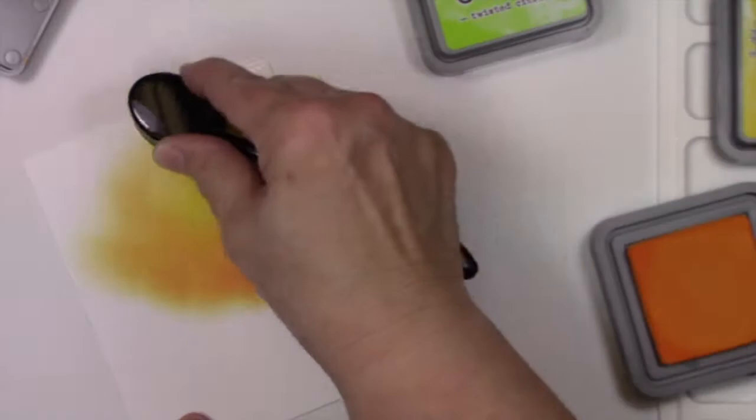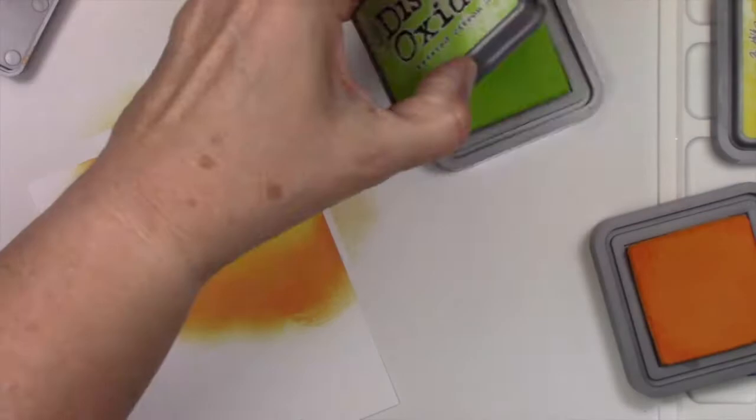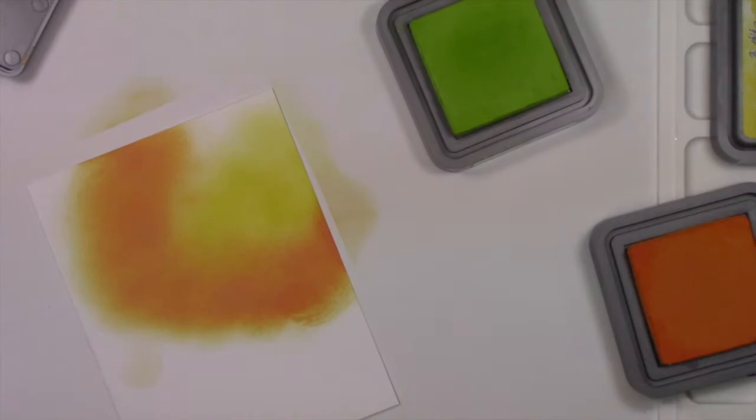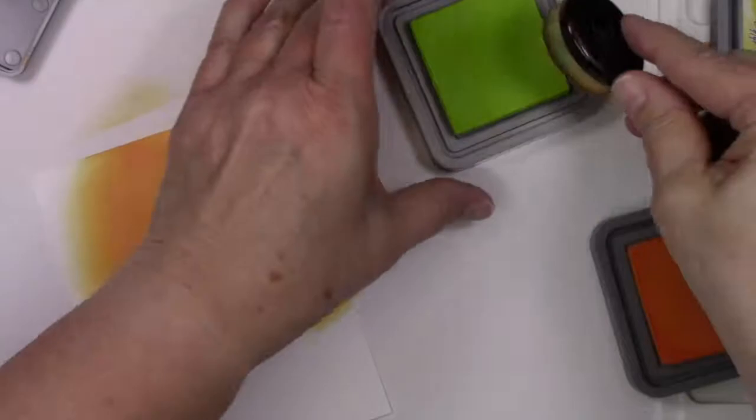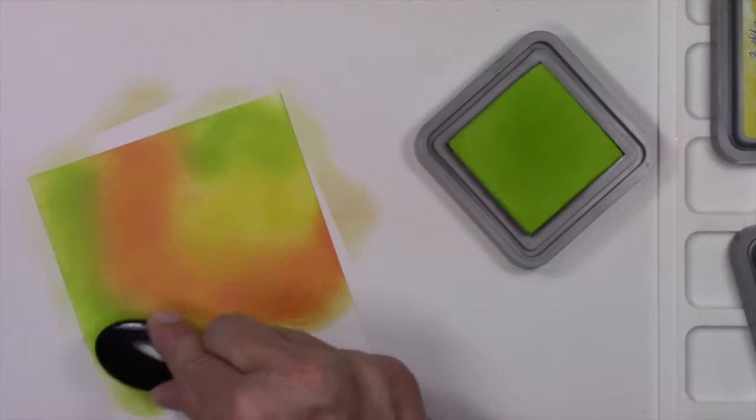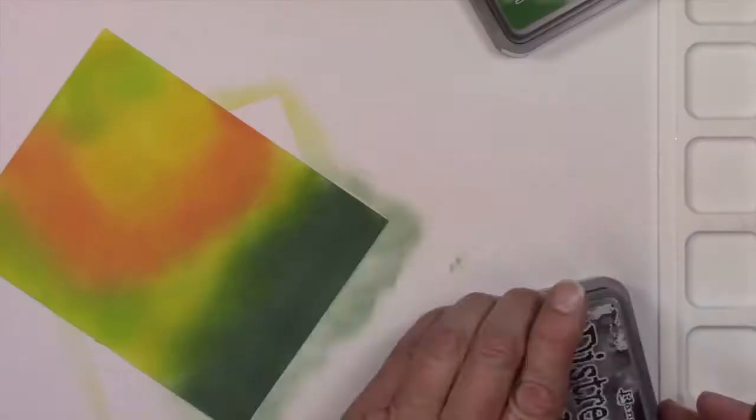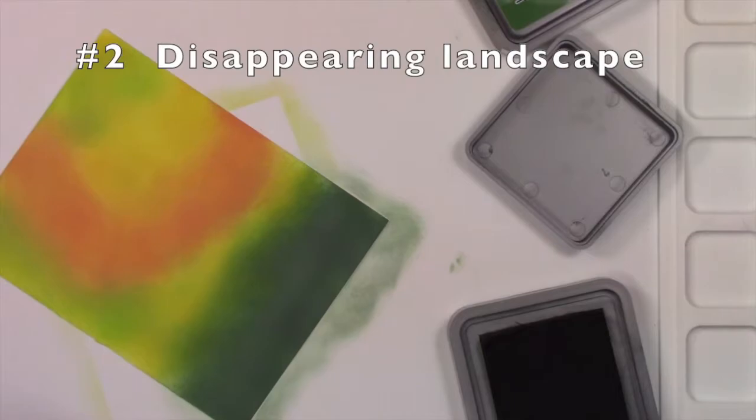So I'm just using Distress Oxides because they do blend like butter. And if you look at the pad on the right, I did get a little yellow on the orange, but it doesn't matter because it's oxide to oxide and that's okay. Plus you could wipe it off if you wanted to. It really doesn't hurt anything. And all I'm doing is wiping those off on a cloth in between.